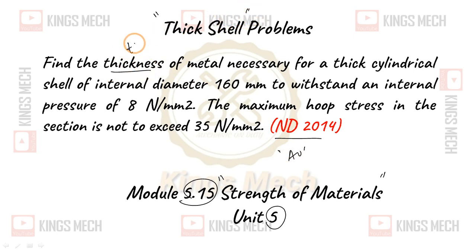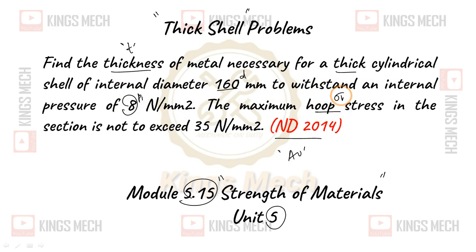Find the thickness of metal necessary for a thick cylindrical shell of internal diameter 160 mm to withstand an internal pressure of 8 newton per mm square. The maximum hoop stress in this section is not to exceed 35 newton per mm square. That's how to find the thickness.